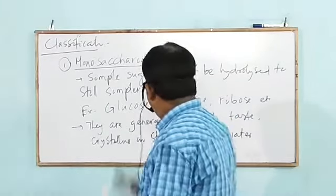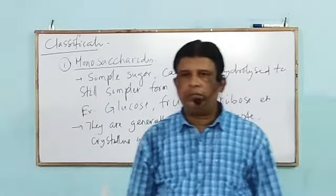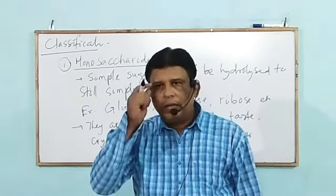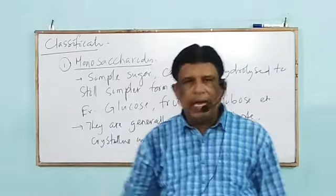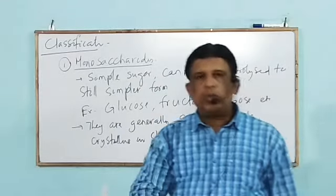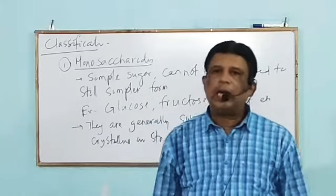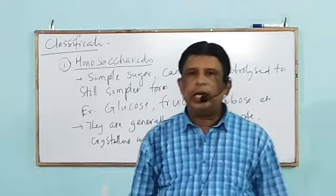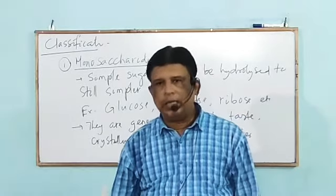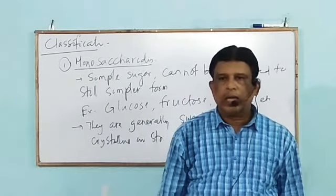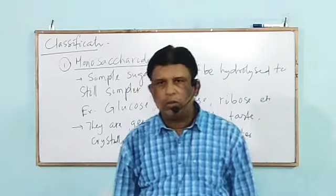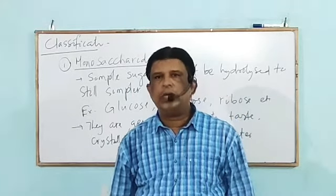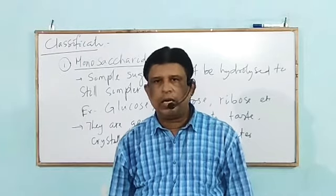Common examples are glucose and fructose. Monosaccharide is of two types: those which contain an aldehyde group are known as aldose, and those which contain a ketone group are known as ketose. Ribose and glucose come under aldose, while fructose comes under ketose. That is all about monosaccharide.